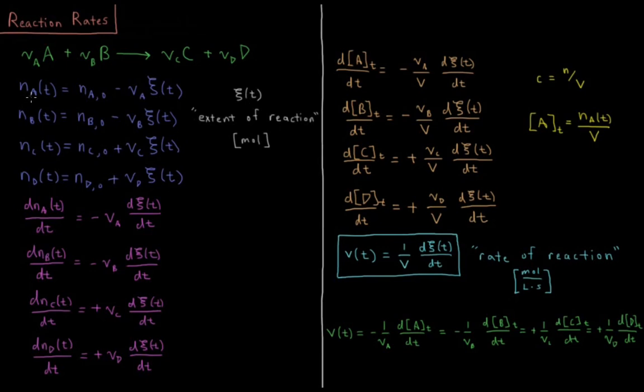If we want to look at the number of moles of each species that is present as a function of time, the number of moles of A as a function of time equals the number of moles of A at t equals zero minus nu A times xi of t. So it starts out at some default value and decreases as the extent of reaction moves forward.